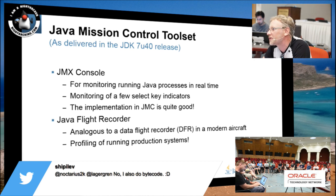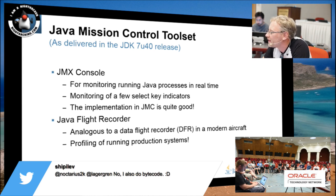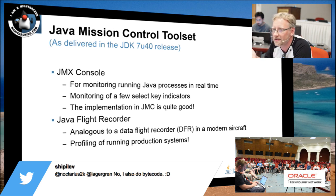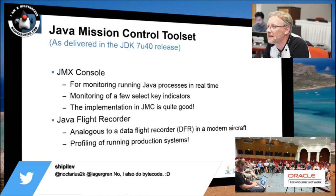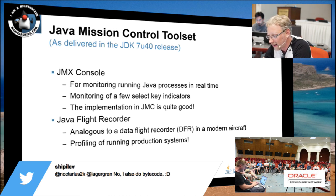There are two main tools in Mission Control. There's a JMX console that you can use to do whatever you normally do with the JMX console, plus a little bit extra. We have some metadata that allows us to know the unit of measurement and some other things about attributes, so we can show you figures in a much more meaningful way. And then we have the Java Flight Recorder — you can think of the flight recorder as a data flight recorder of a modern aircraft: you keep continuously recording things, and if something bad happens, you can go back and look at what was actually going on in the runtime.